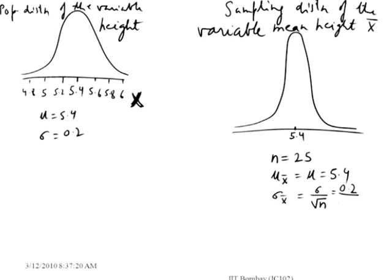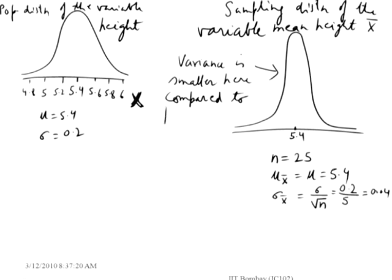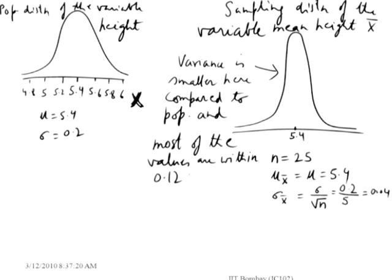0.2 by 5, which is 0.04. So we see that the variance is smaller here compared to the population, and most of the values of X-bar are within 0.12 units, 0.12 units being three times the SD of X-bar — three times 0.04.